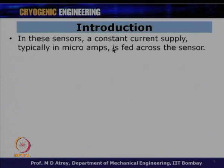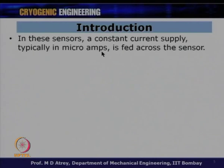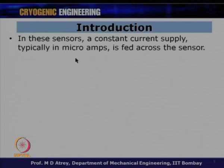In these sensors, a constant current supply — typically in microamps — is fed across the sensor. This is a very small current; in earlier metallic sensors we had milliamps. In diodes and Cernox sensors, the constant current is in microamps, resulting in very low heat generation (I²R is negligibly small), so errors involved are also very small.